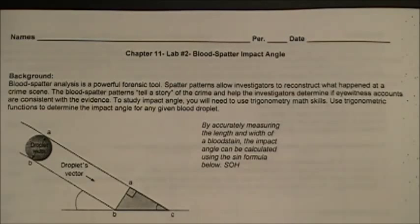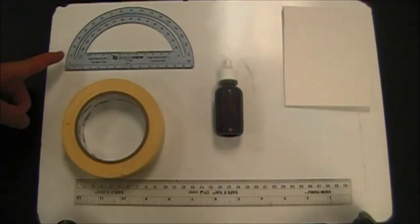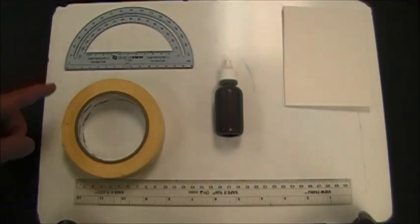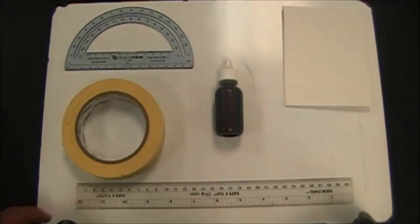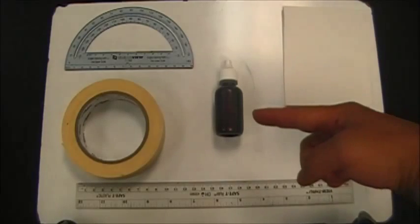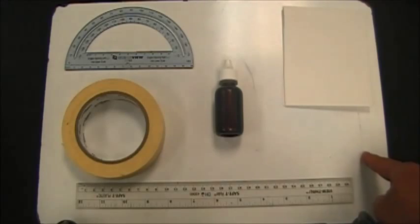The lab that you're doing today is a blood spatter impact angle analysis. For this lab, the materials you will need are a protractor, a roll of masking tape, a metric ruler, simulated blood, nine index cards, and a whiteboard.